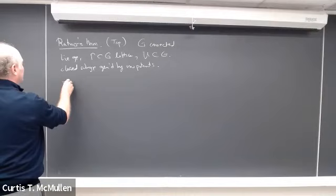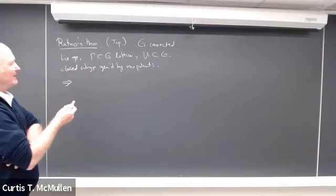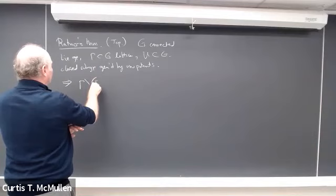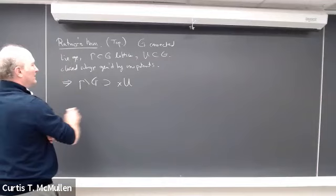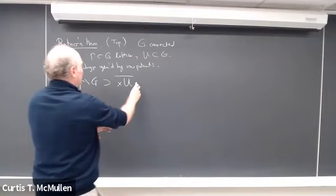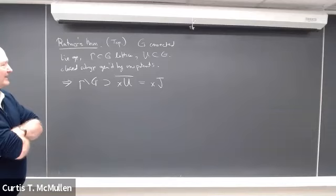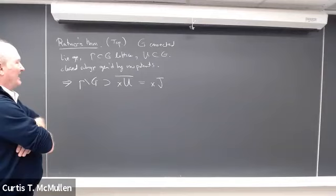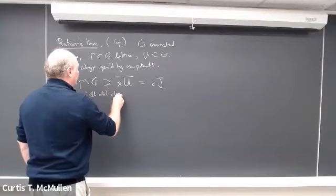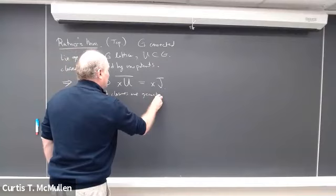The conclusion is that we know what the orbit closures are for every element of gamma mod G. Inside gamma mod G, we pick an element X, take its orbit under U, and take the closure. The miracle is that this is always a geometric object: it equals the orbit of X under some other closed subgroup J contained in G. So all orbit closures are geometric.